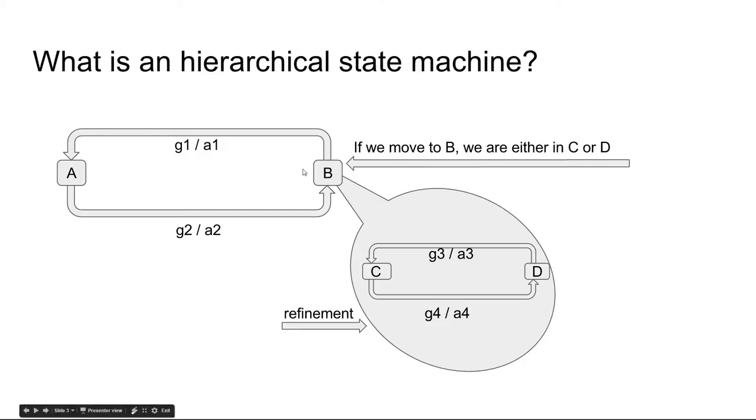We have states A and B. State B has a refinement which consists of states C and D.